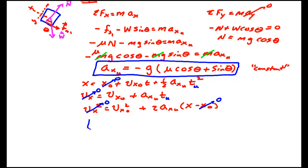So the time on the way up is equal to minus v₀ over minus g times μ cos θ plus sin θ. Or we can just get rid of those two minus signs.